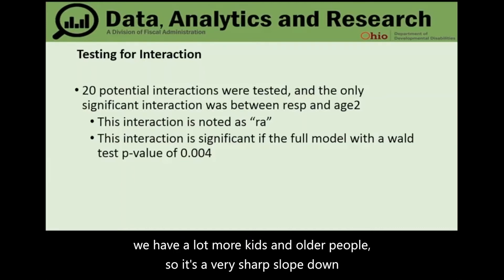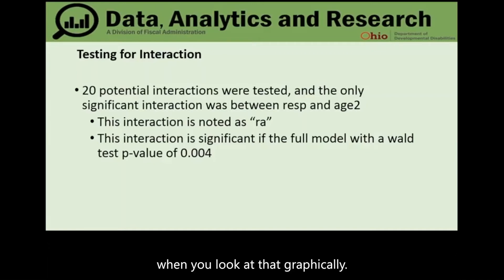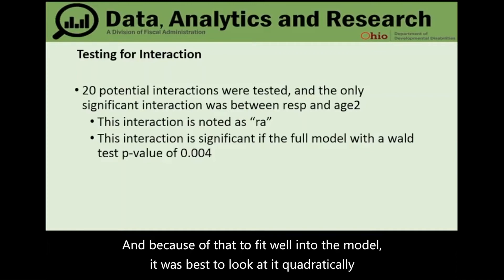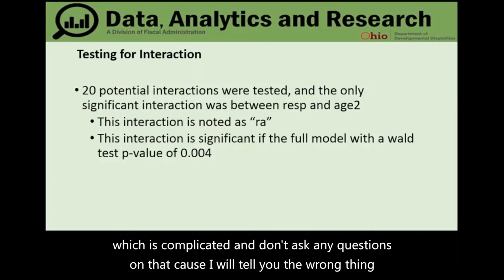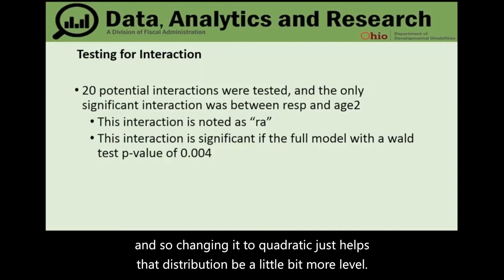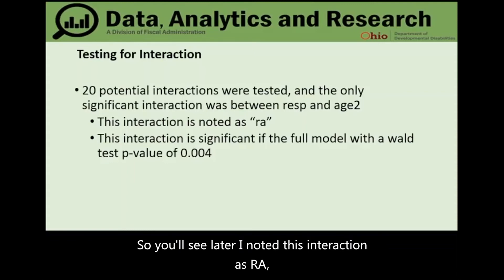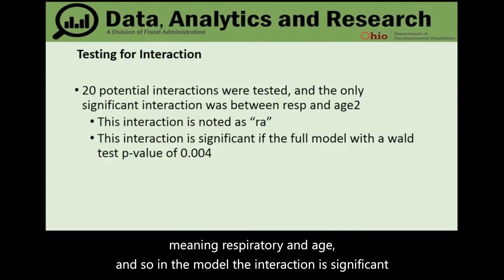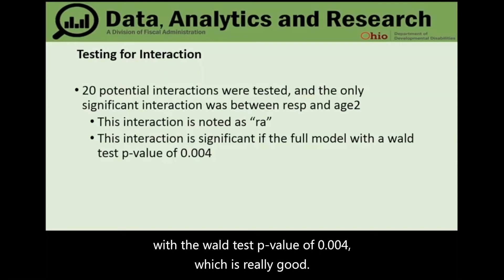An analysis was also done to determine the best way to represent age in the model. Because the distribution of Medicaid recipients and people served by DODD skews heavily toward younger ages with a sharp downward slope, age was best represented quadratically to level that distribution. The respiratory-age interaction is noted as 'RA' in the model and was significant with a Wald test p-value of 0.004.